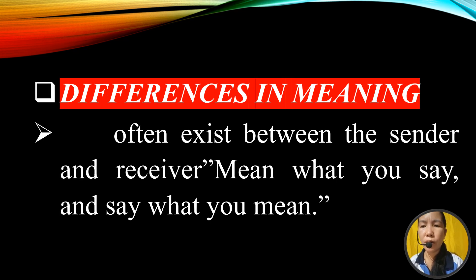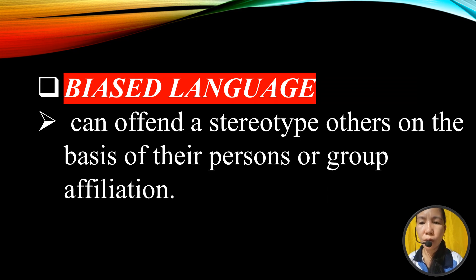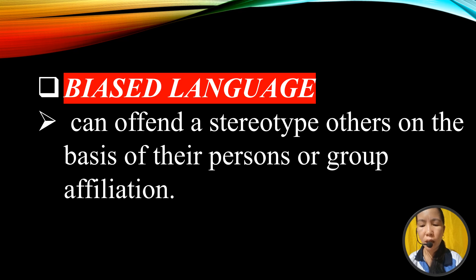Next is differences in meaning, which often exist between the sender and receiver — mean what you say and say what you mean. Halimbawa, kapag ang guro ay nagbigay ng instruction para sa isang project, maaaring iba-iba ang interpretation ng mga estudyante. Ang guro ay maaaring magsabing gumawa ng isang presentation tungkol sa kasaysayan ng Pilipinas, ngunit ang ibang estudyante ay mag-focus sa iba't ibang bahagi depende sa kanilang pagkakaintindi. Next is biased language, which can offend or stereotype others on the basis of their personal or group identity. Ang biased language ay maaaring makasakit o magpalaganap ng mga stereotype batay sa personal na katangian o grupo ng isang tao.